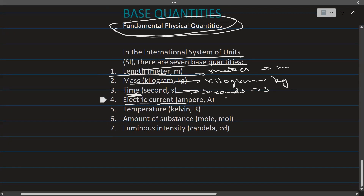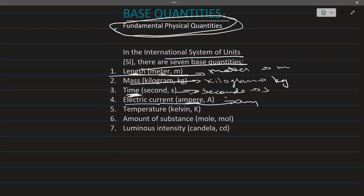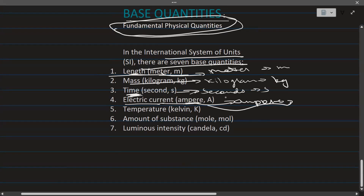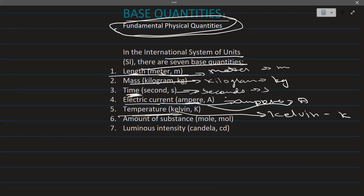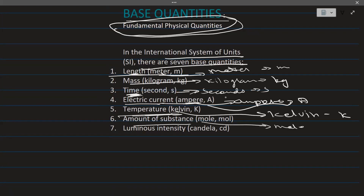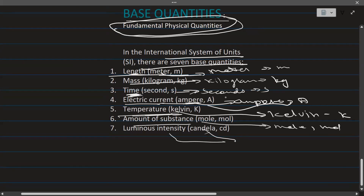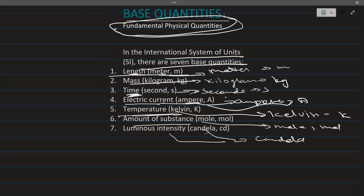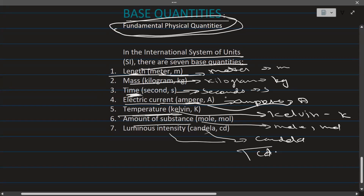The fourth base quantity is electric current — its base unit is the ampere and its symbol is A. The fifth is temperature — its base unit is the kelvin and its symbol is capital K. The sixth is amount of substance — its base unit is the mole and its symbol is mol. The seventh is luminous intensity — its base unit is the candela and its symbol is cd.